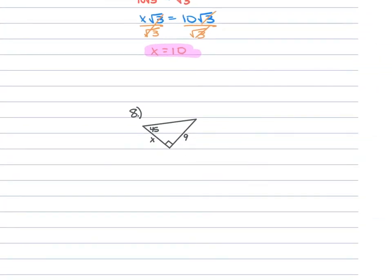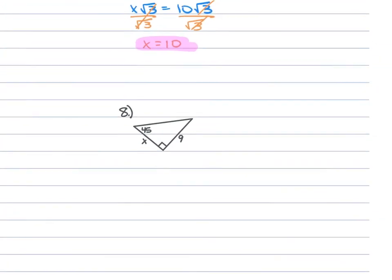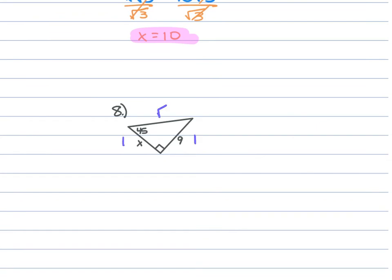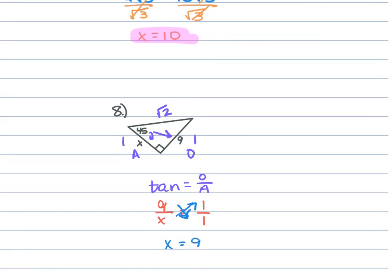For problem 8, a 45-45-90 triangle with side lengths 1, 1, and √2. We have adjacent and opposite, so that's tangent. Plugging in values: opposite is 9 over adjacent x equals 1 over 1. Cross-multiplying gives x = 9.